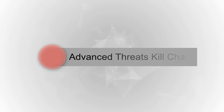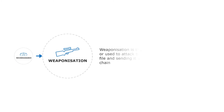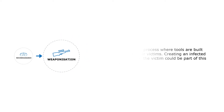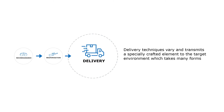Let's look at a typical kill chain for advanced threats. Adversaries initially perform reconnaissance, which consists of techniques that involve adversaries actively or passively gathering information that can be used to support targeting. It then involves weaponization, which is the process where tools are built or used to attack their victims. Creating an infected file and sending it to the victim could be part of this chain. Threat actors employ several delivery techniques and transmit a specially crafted element to the target environment, which takes many forms after proliferation.